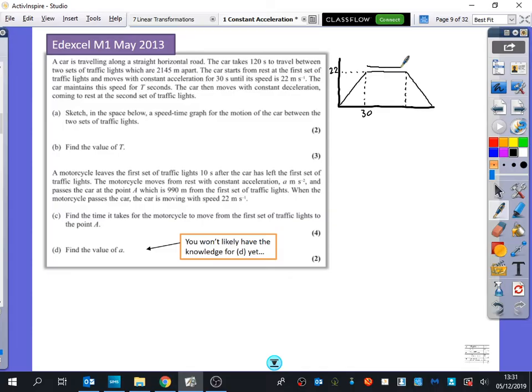So we know that this distance along here is T and we know that this time over here is 120 because it told us that it was 120. So I'm sure that first part was fine to sketch in the space the speed time graph for the motion of the car between the two sets of traffic lights. The second thing it wants us to do is to find the value of T. What's that actually asking for us to do?